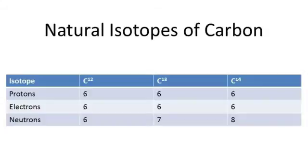Carbon is a great example of this, with three naturally occurring isotopes: carbon-12, carbon-13, and carbon-14, which each have six protons and six electrons, but six, seven, and eight neutrons, respectively.